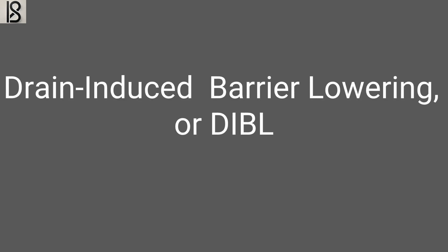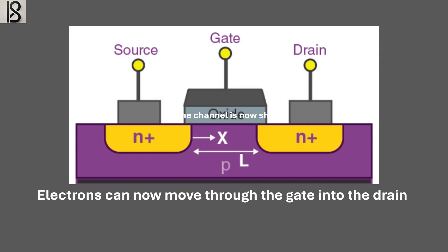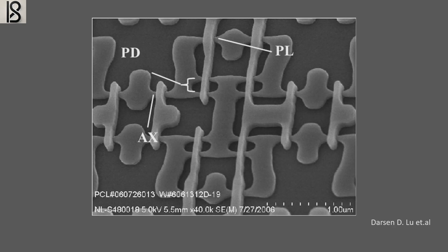The second major issue caused by short channel effects is drain-induced barrier lowering, or DIBL. This happens when the source and drain are so close together that electrons from the source can leak into the drain, sometimes by moving under the gate — almost like a rabbit burrowing. This leads to a small unwanted current flow, so the transistor consumes power even when it's in standby or not performing any task. When these two short channel effects are multiplied across billions of transistors, it creates a major power consumption problem.